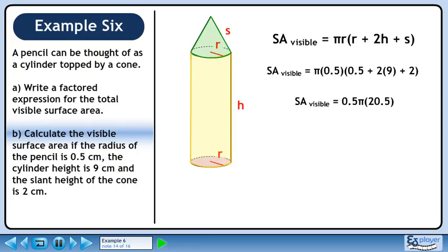We write π times 0.5 as 0.5π so it looks better. The values inside the brackets evaluate to 20.5. 0.5 times 20.5 is 10.25. The visible surface area of the pencil is 32.2 cm².